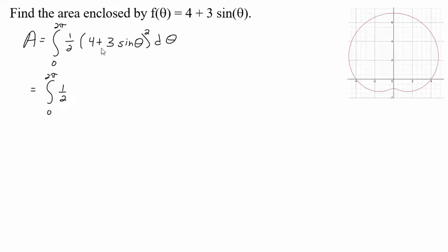First thing we're going to want to do is foil out this binomial, so 4 squared is 16, and then we're going to get 4 times 3 sine which is 12, but we'll double that because we'll have two of those terms. You can write it out and foil it and multiply it if you like. And then 3 sine squared will give me 9 sine squared and d theta.